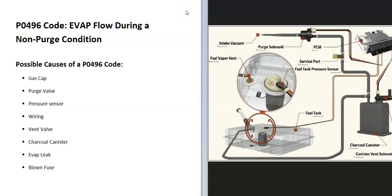Today I'm talking about a P0496 code, what it is and how you go about fixing it. A P0496 code is an EVAP flow during a non-purge condition.